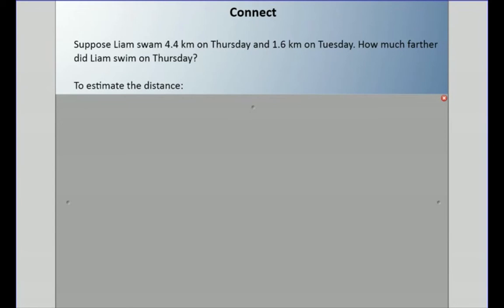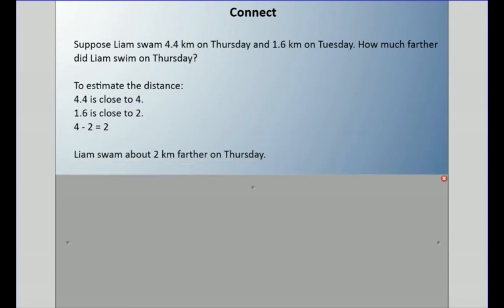Suppose Liam swam 4.4 kilometers on Thursday and 1.6 kilometers on Tuesday. How much farther did Liam swim on Thursday? Before we find the exact answer, let's find an estimate. 4.4 is close to 4, and 1.6 is close to 2, so 4 minus 2 is 2. We estimate about 2 kilometers.